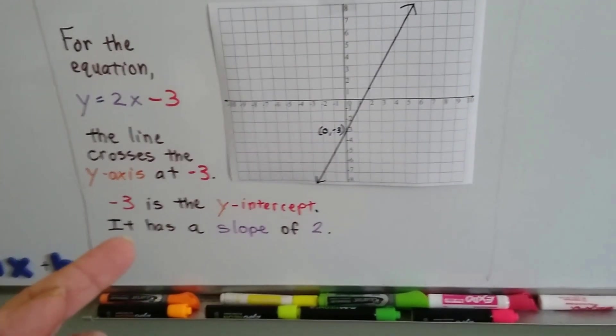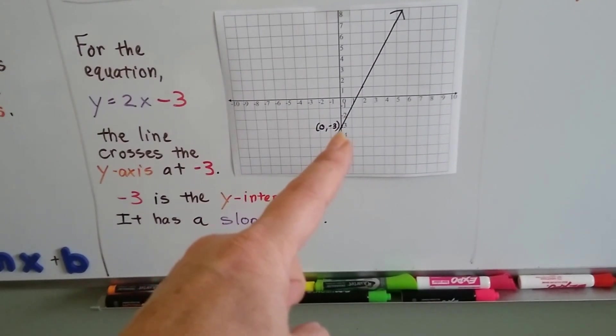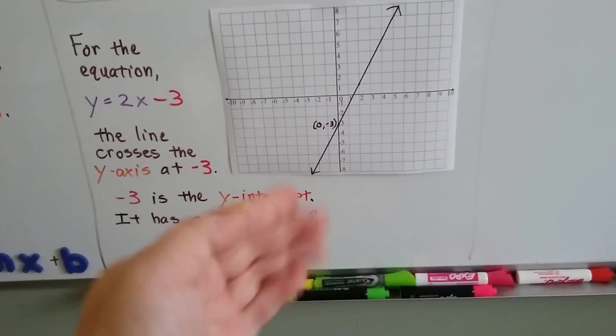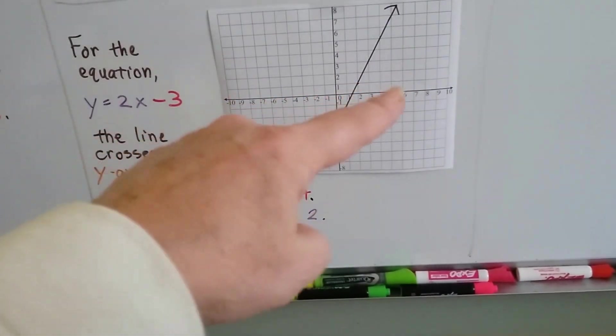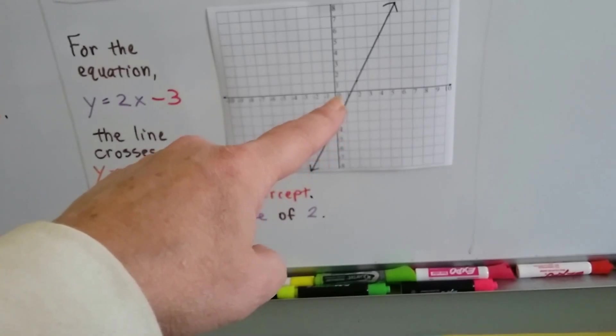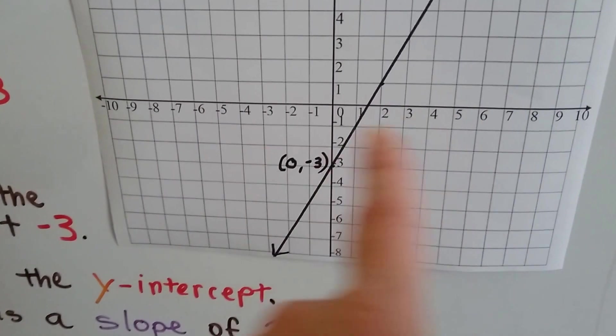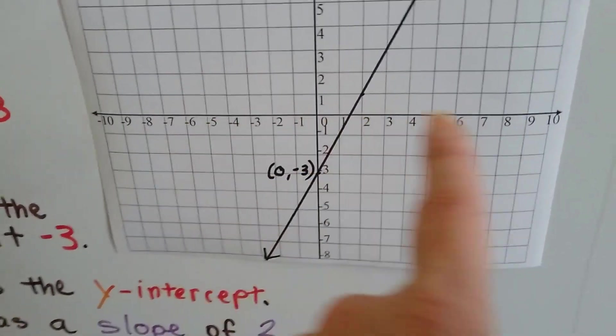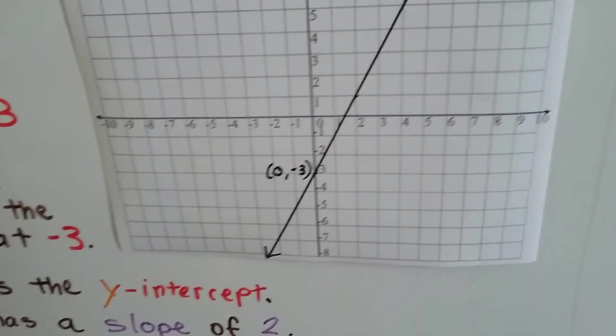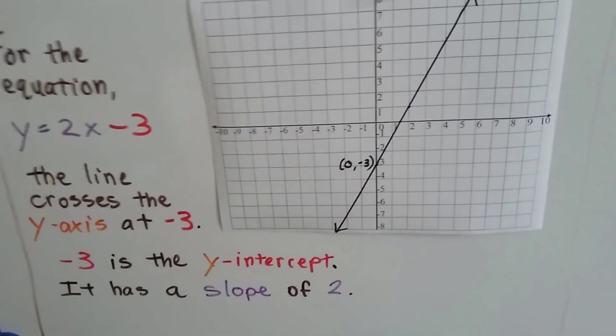And any time we look at the ordered pair for where it's hitting the y-axis, the x-value is going to be 0. Because this point hitting the y-axis sets the x-value for 0. It's 0 on the coordinate plane going this way for the x-axis. But y is at negative 3. And that's our ordered pair.